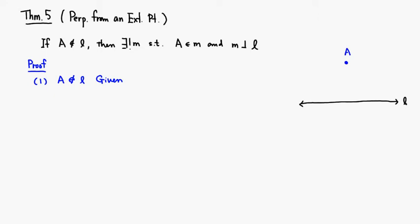I'm going to postpone the uniqueness part, but I'm gonna focus on the existing part. So basically we want to show you how to construct it. Let's start with the given. So A is a point outside of the line L.